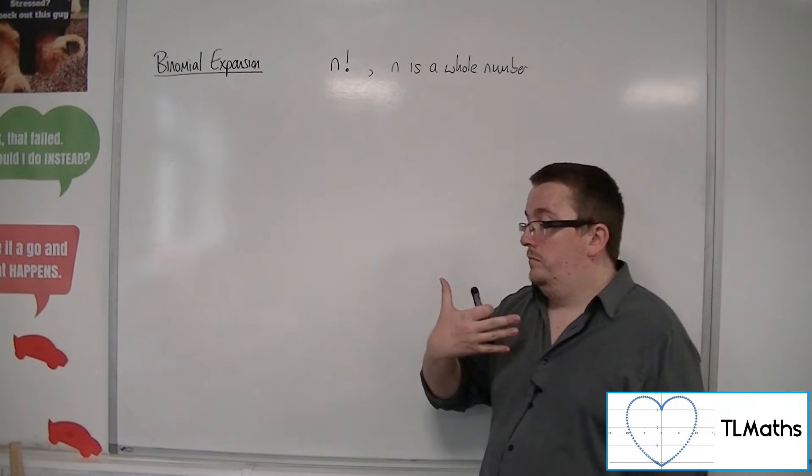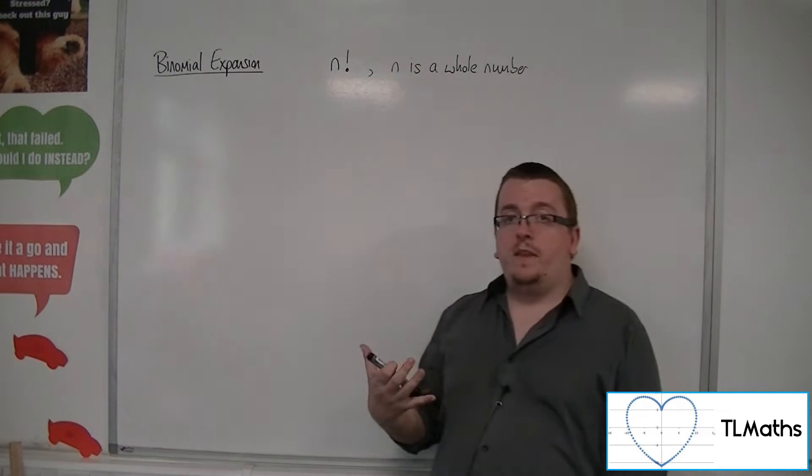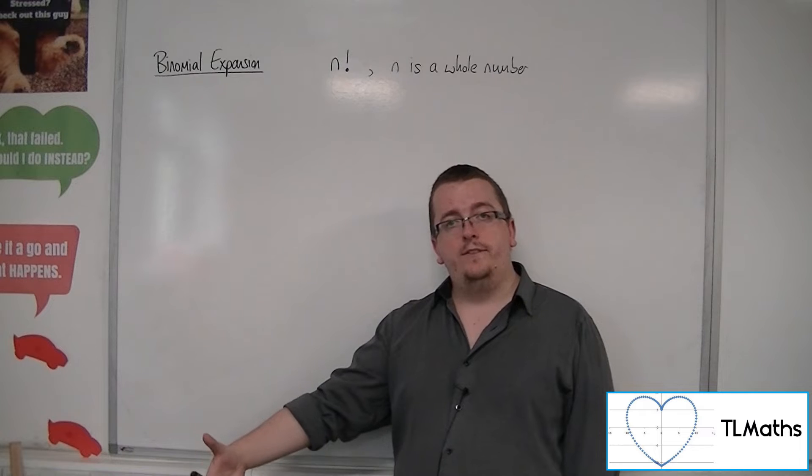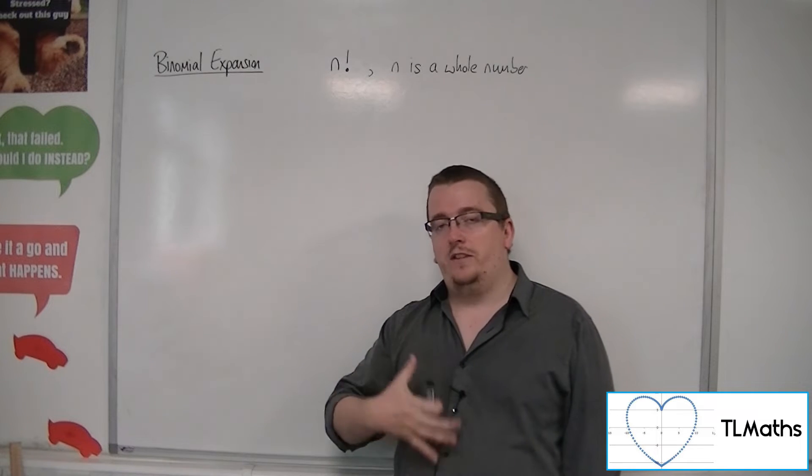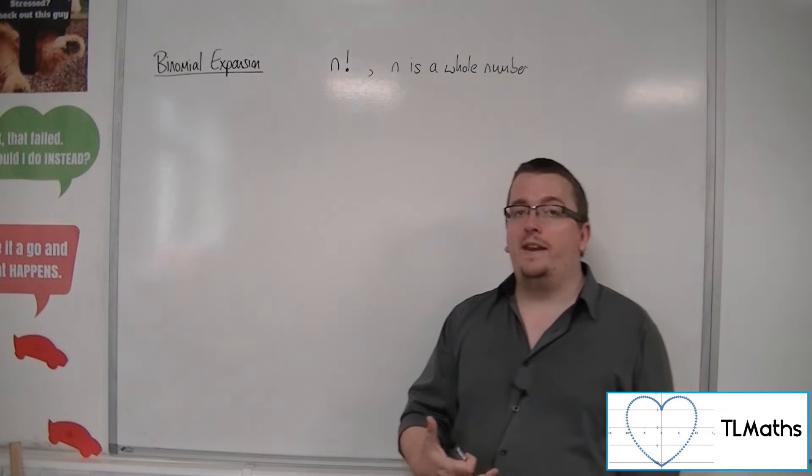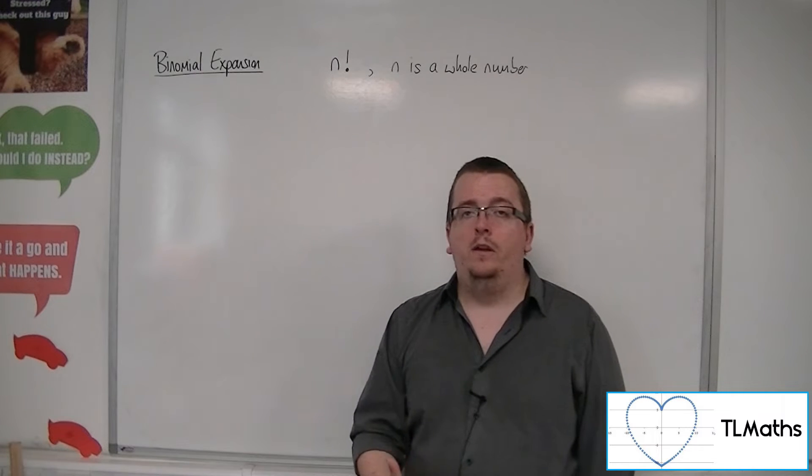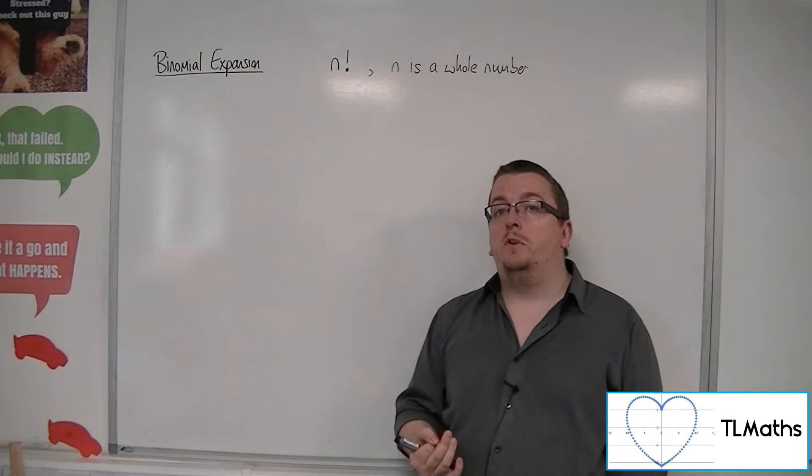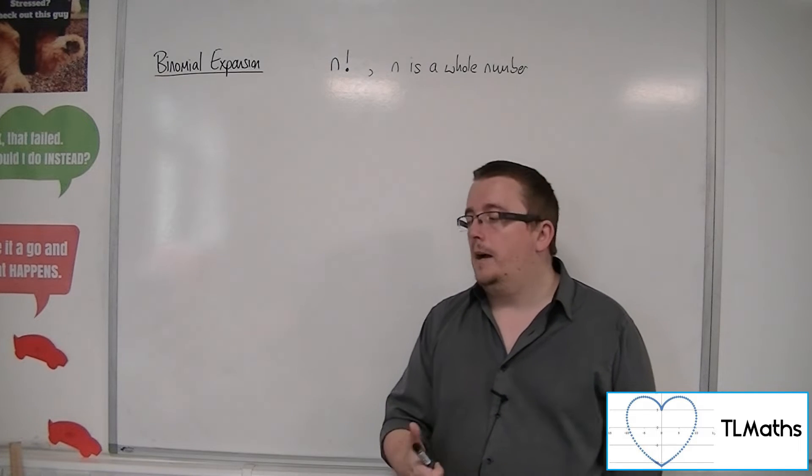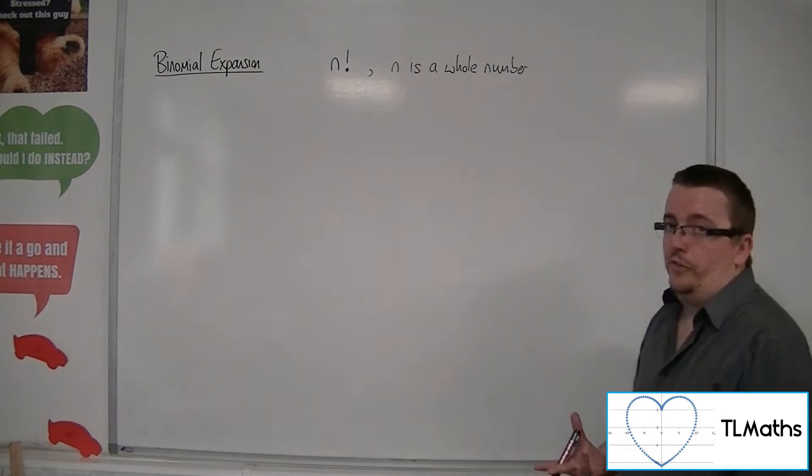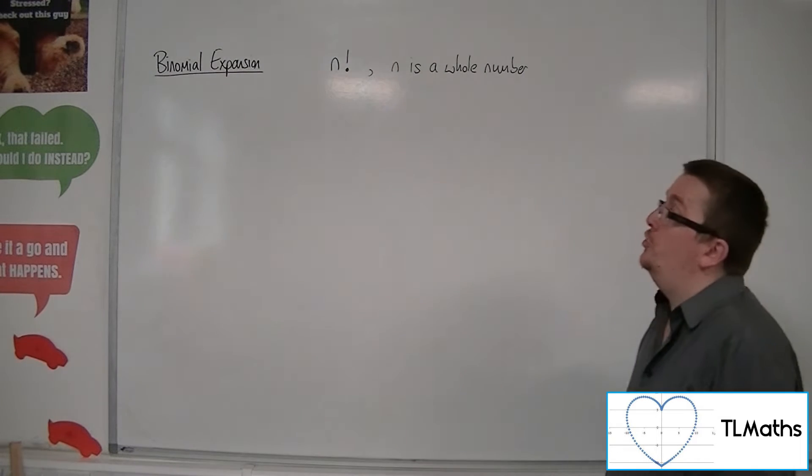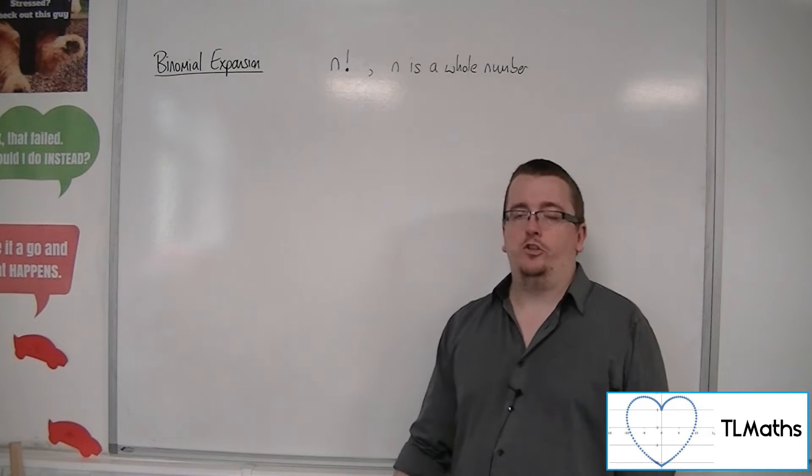Now, for those of you interested, it can be extended to look into decimals. So you can have 1.5 factorial, and it's extended using something called the gamma function. But that's a bit beyond the scope of this specification. It's something that you could potentially meet at degree level.